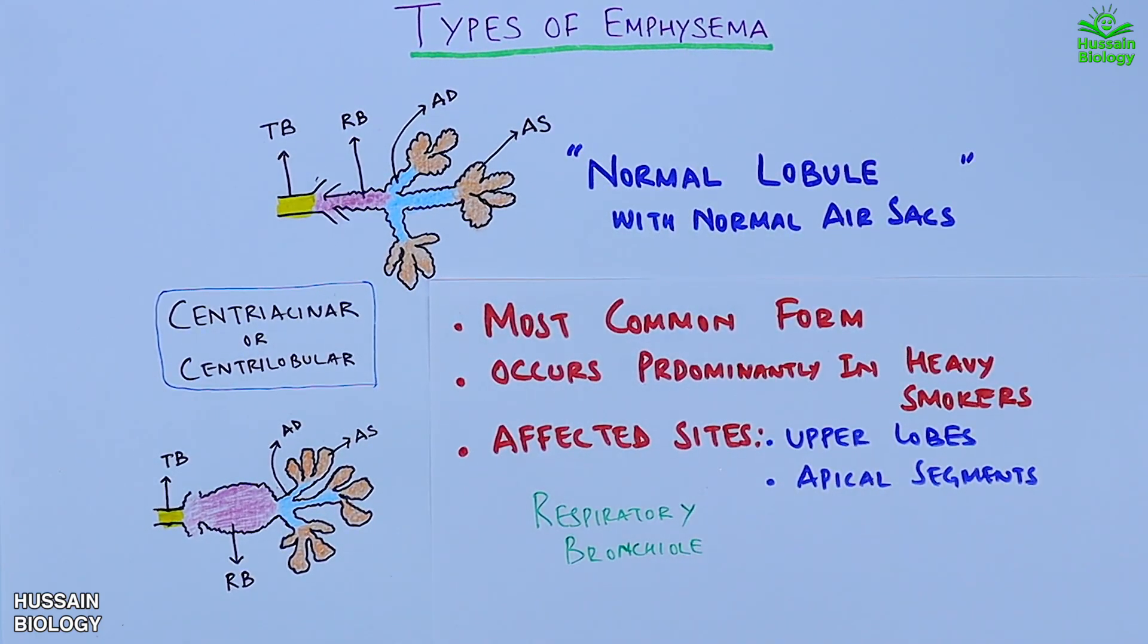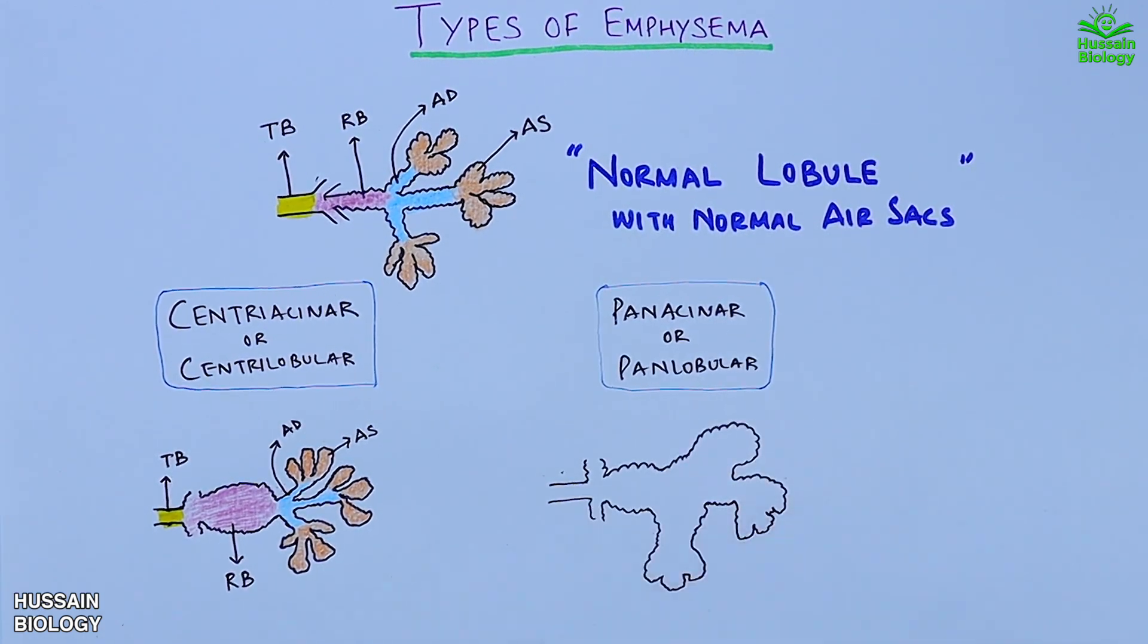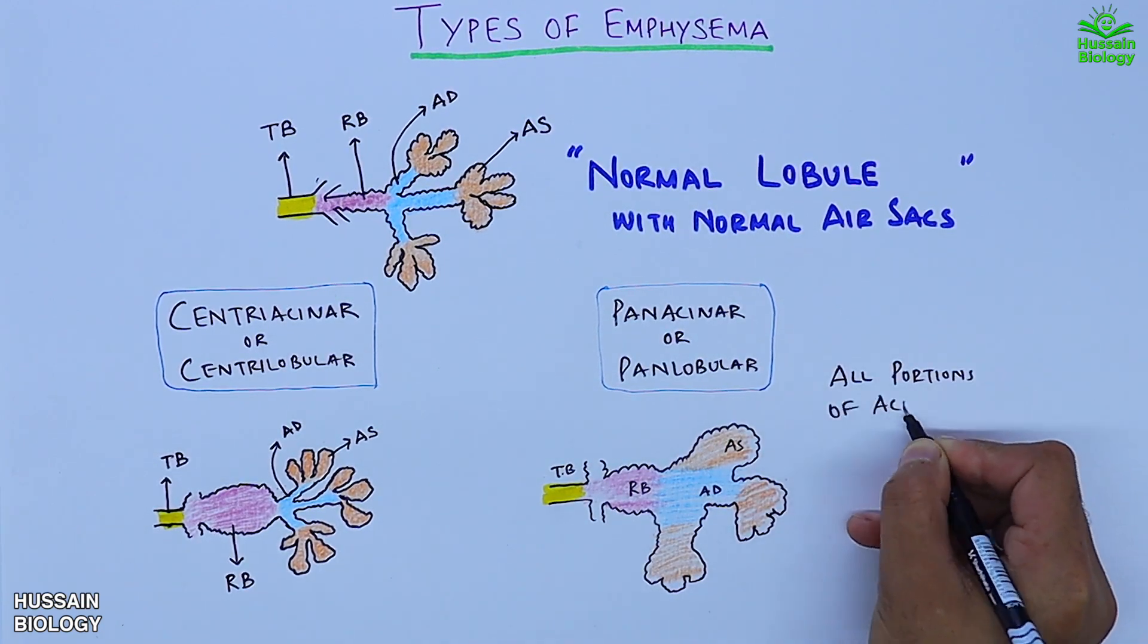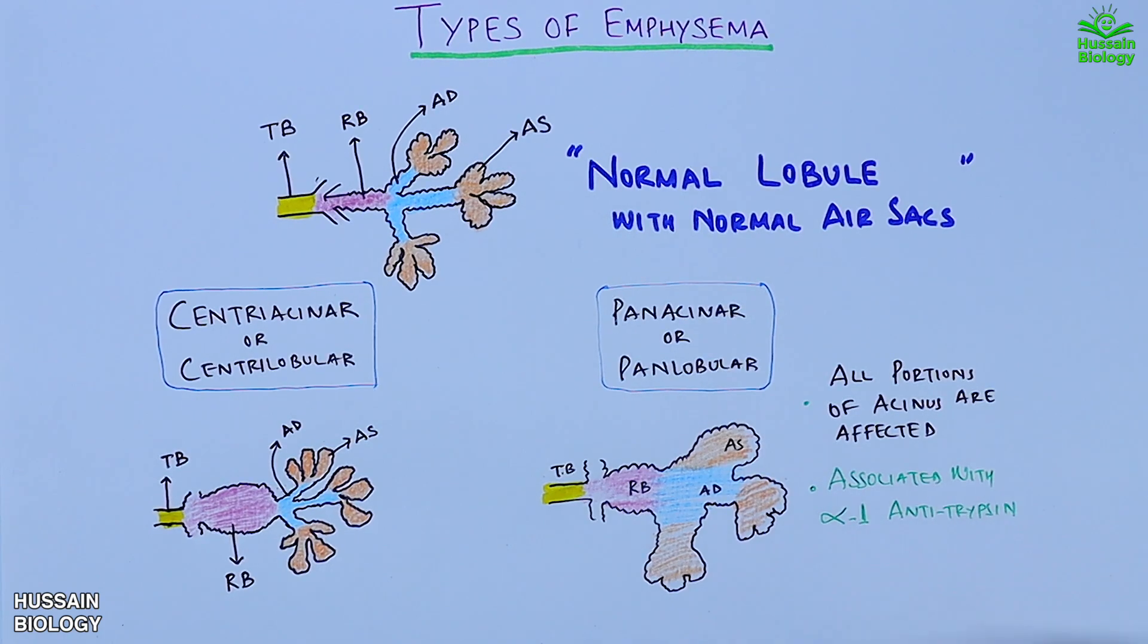The second type is panachinar or panlobular amphysema. As shown in the diagram, we can see all the portions of the acinus are affected. This type is associated with alpha-1 antitrypsin deficiency protein.